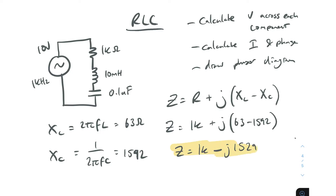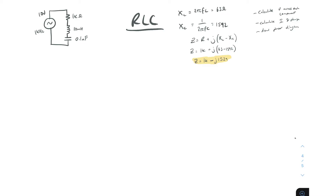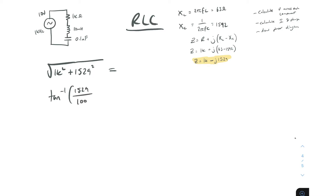To calculate our current, we need current equals voltage divided by impedance. We don't want to divide by impedance in rectangular form — that's a huge headache. So we want to convert it to polar form. To get the magnitude, we take the square root of 1000 squared plus 1529 squared. To get the angle, we take tan⁻¹ of 1529 over 1000.